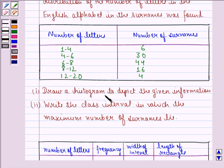Now we have to draw a histogram to depict the given information and second we have to write the class interval in which the maximum number of surnames lie. So let us see the solution to this one.